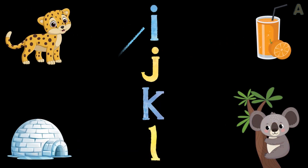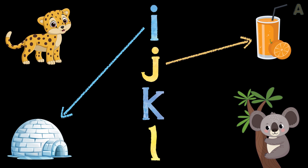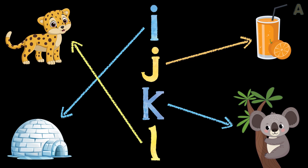I for igloo. J for juice. K for koala. L for leopard.